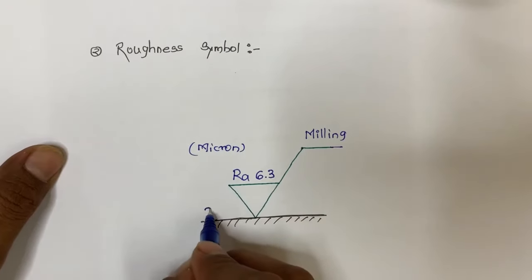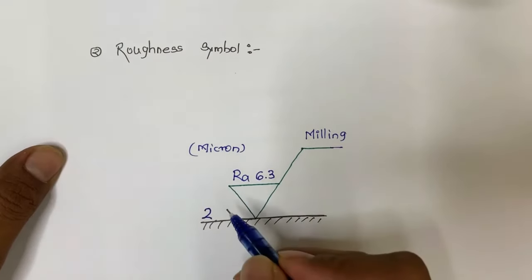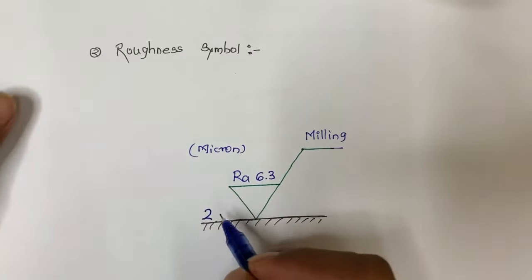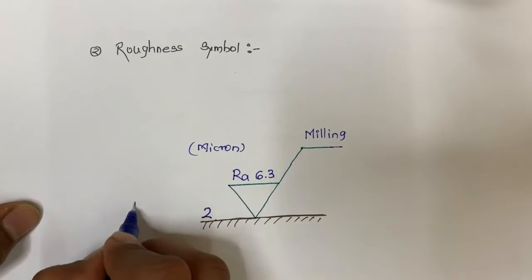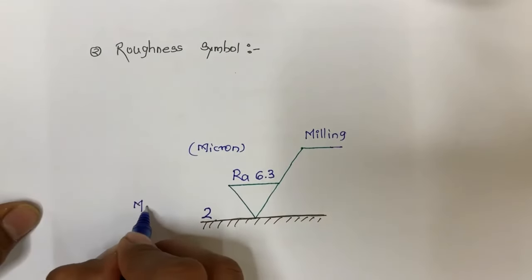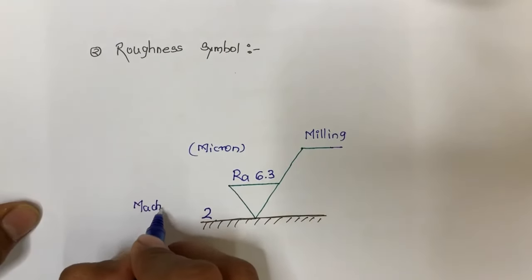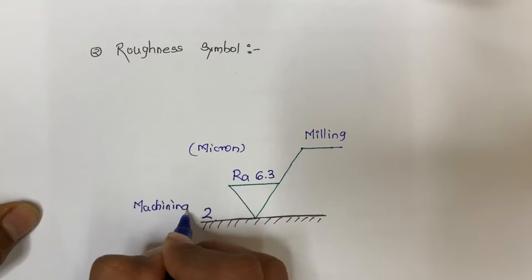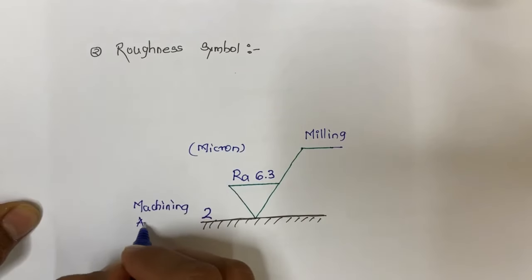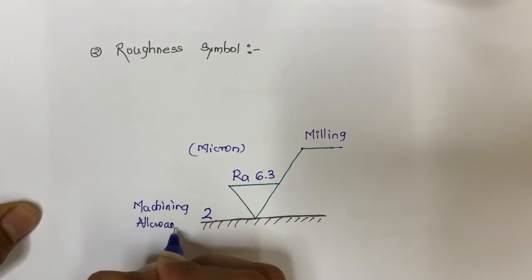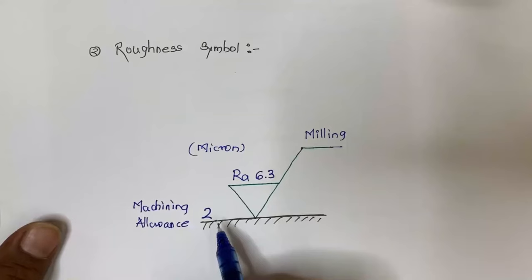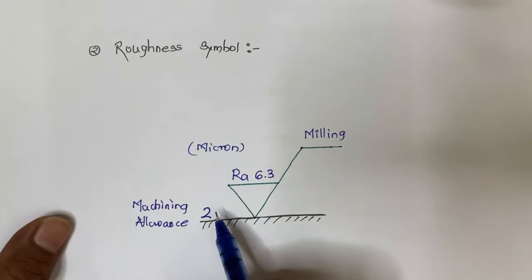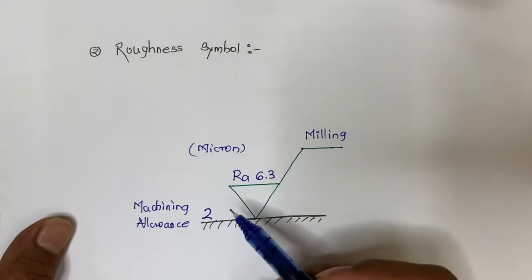On the left side of the symbol, a numerical value represents the machining allowance — indicating what machining allowance is required for this surface. For example, a value of 2 may be specified here.